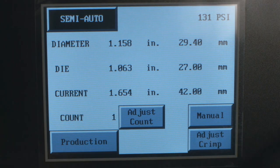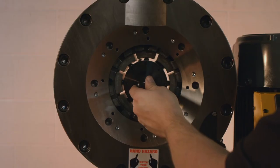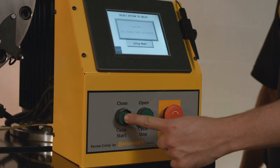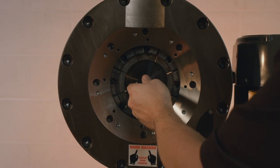In semi-auto mode, the foot switch or the close button will close the crimper head but must be held throughout the crimping process as releasing it will halt the closing action.